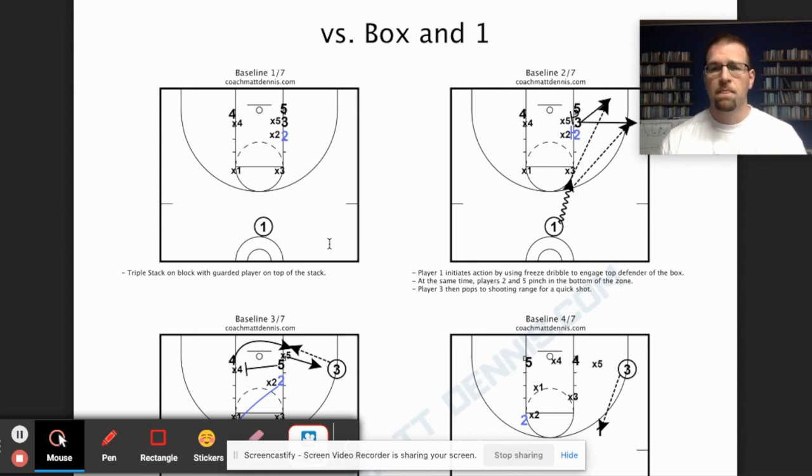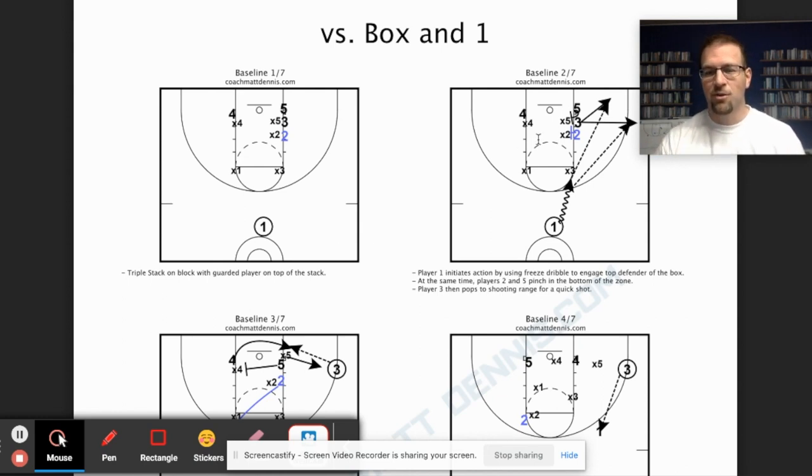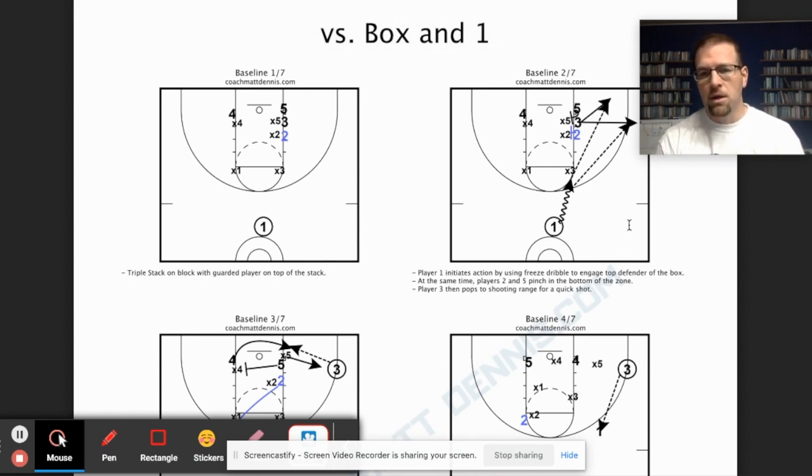But if player two is a dynamic player, they're the ones that are getting the box and one. If player two is a dynamic player, then X5 is going to have a hard time guarding them. So that's one thing that we want to do.